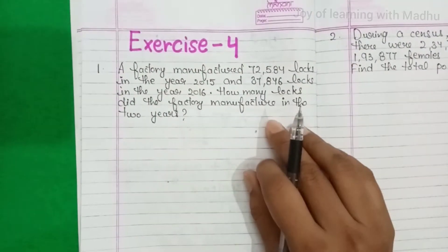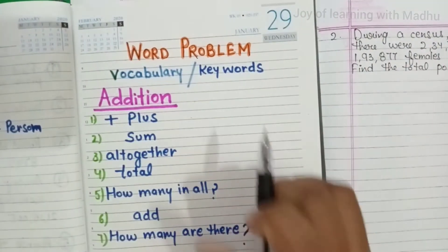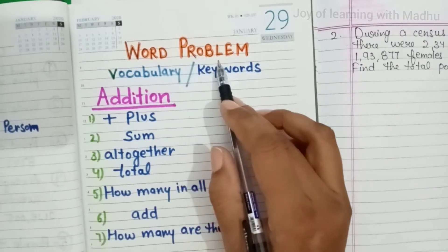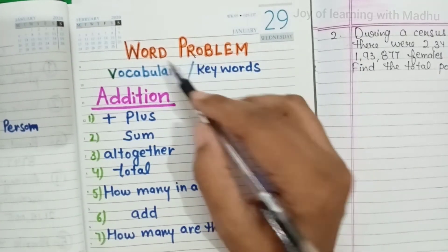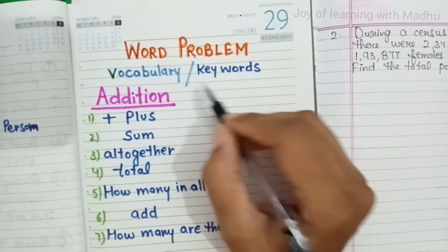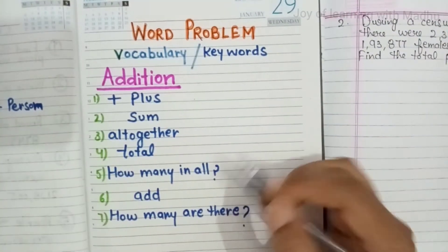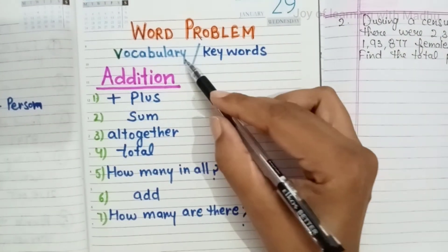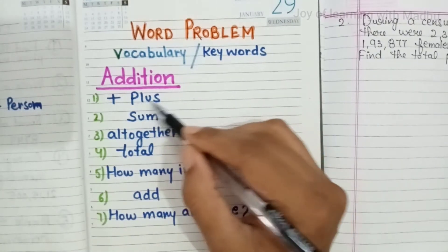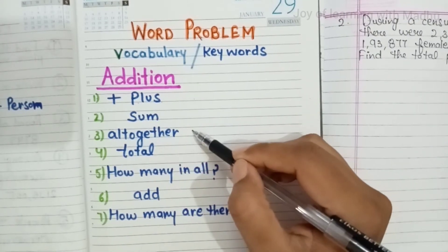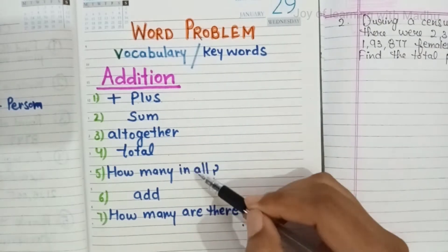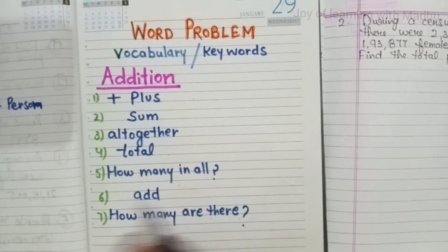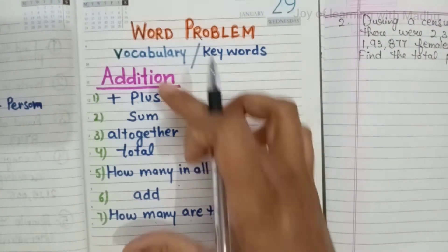Before starting these questions, we have to introduce the keywords of vocabulary related to word problems of addition. We have to learn some keywords — and it will increase our vocabulary also. So these keywords are: plus, sum, altogether, total, how many, all, add, how many are there.